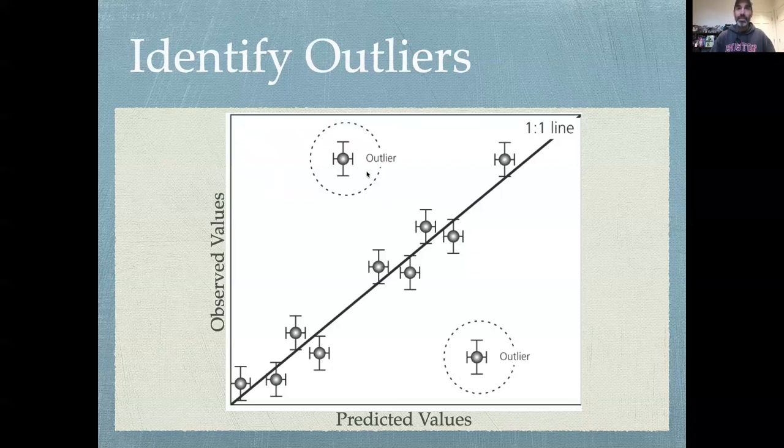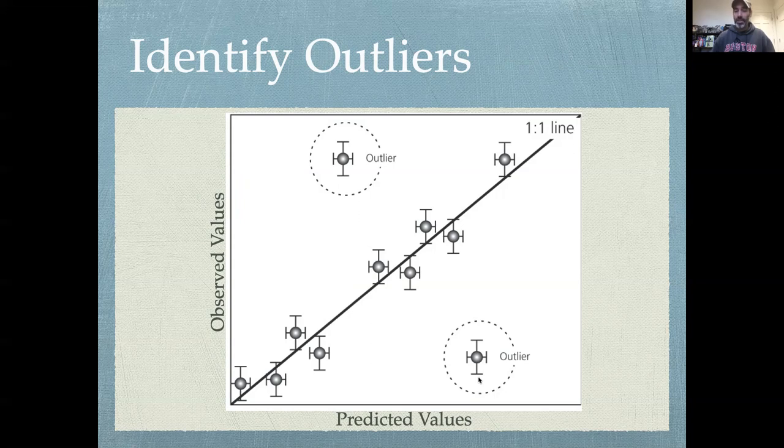I would strongly argue that thinking about outliers requires that you actually stop and think about your data. You need to understand why you have these outliers. Sometimes these outliers you can trace back to data entry errors or something where data got corrupted, and you can remove the outliers because you've identified that these are just entered wrong or measured wrong, or you can trace it back to some other feature of the system where something happened that corrupted this data.